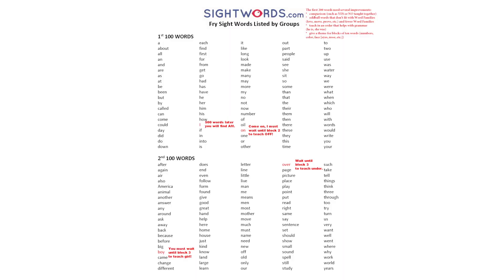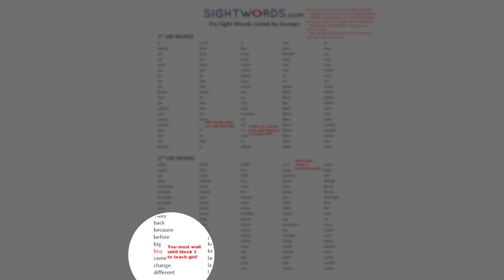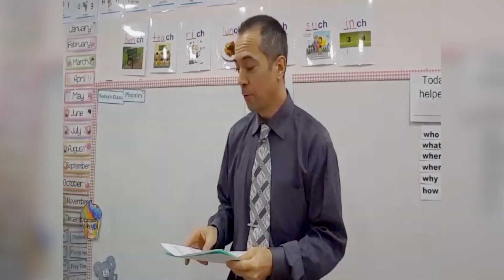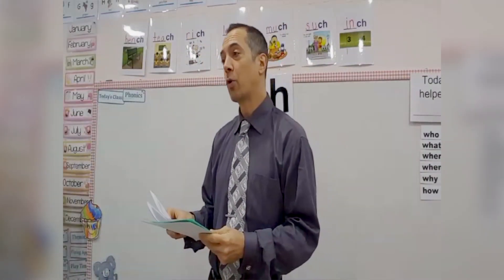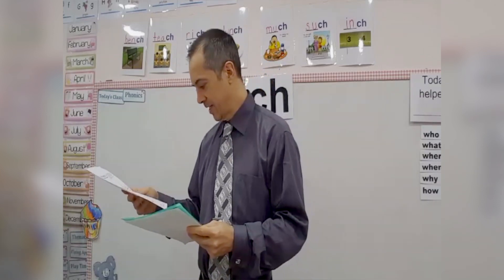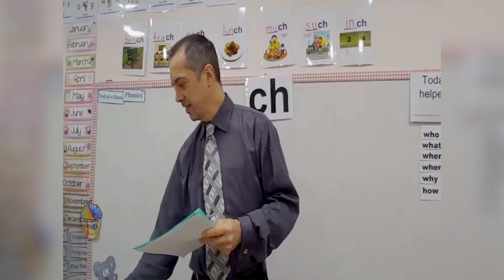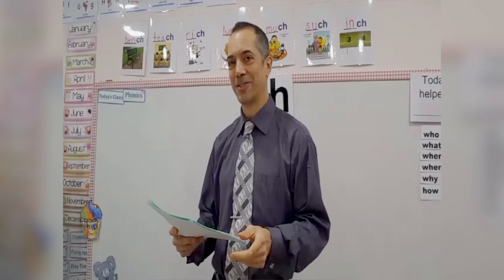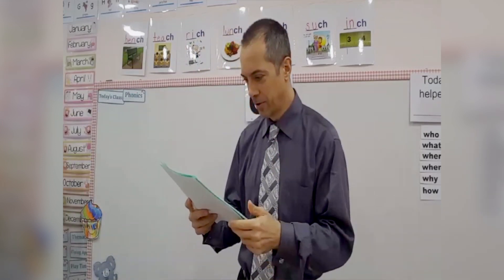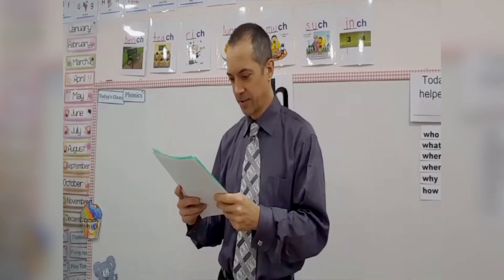You'll find the word 'boy' in the second block, and you'll have to go to the third block to find the word 'girl.' So opposites and genders are not considered equal or important according to this list.